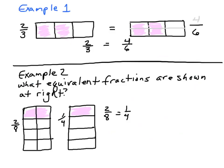In example one, we have these rectangles. Here we have one, two, three equal parts, and we have shaded two of those three equal parts — two thirds. Here, we have this same rectangle, but I've divided it in half with a light color. So now we see one, two, three, four of the sixths — four of the sixths. So we can see these two thirds are exactly the same as these four sixths. It's the same thing — I just put a little line through it.